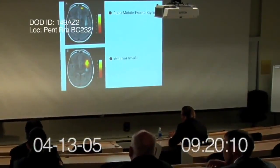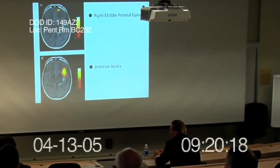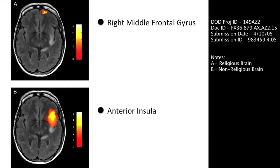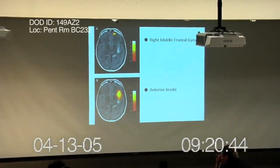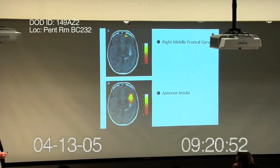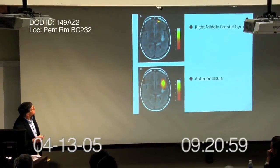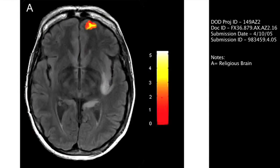We have some very remarkable data in this next slide. Here we have two brain scans — these are fMRIs — of two different individuals with different levels of expression of VMAT2. On top is an individual who's a religious fanatic and has high levels of VMAT2, which we've repeated numerous times. In each case, these individuals were read a religious text. This individual lit up the right middle frontal gyrus, shown here.